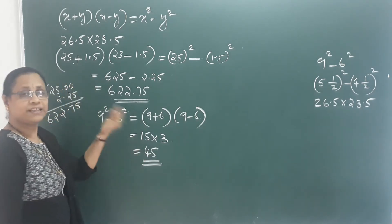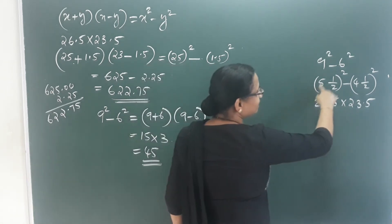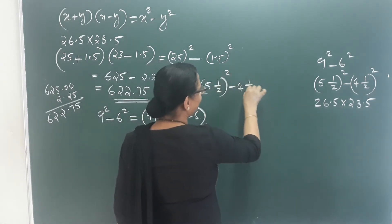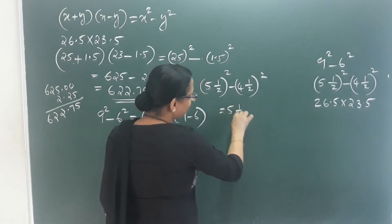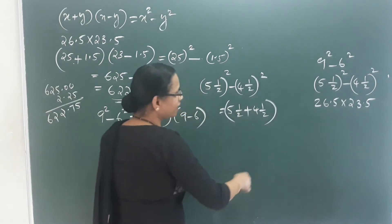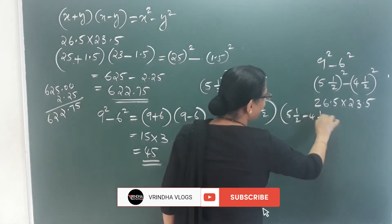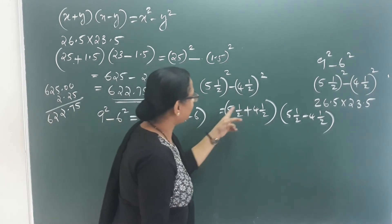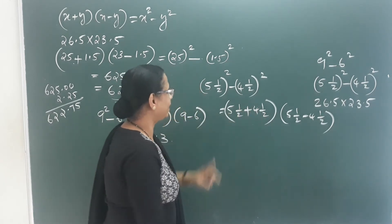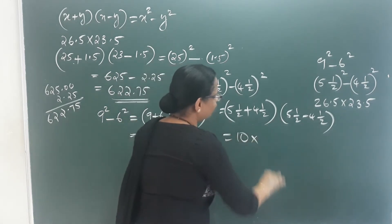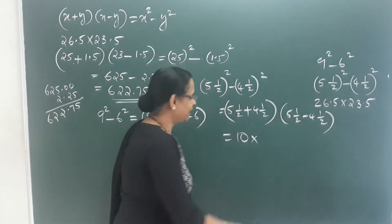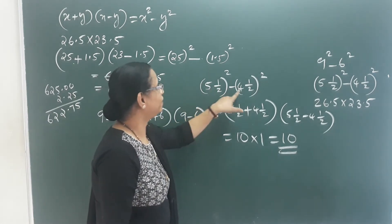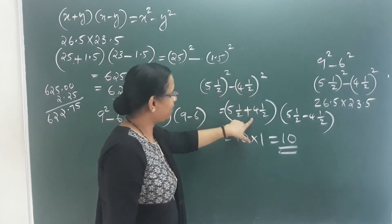We can use this calculation. Now let's look at 5 and a half square minus 4 and a half square. That is 5 and a half plus 4 and a half into 5 and a half minus 4 and a half. 5 and a half plus 4 and a half is 10, and 5 and a half minus 4 and a half is 1. So 10 into 1 equals 10. We subtract using a square minus b square equals a plus b into a minus b. We can convert this formula — it is very easy.